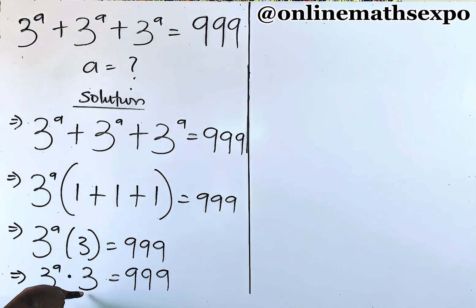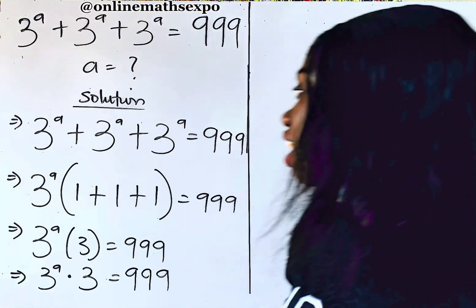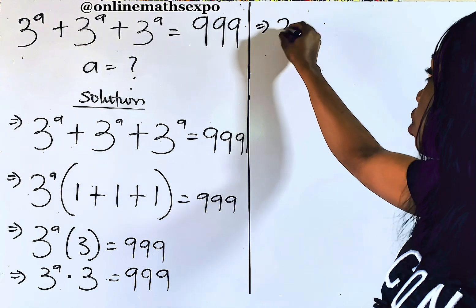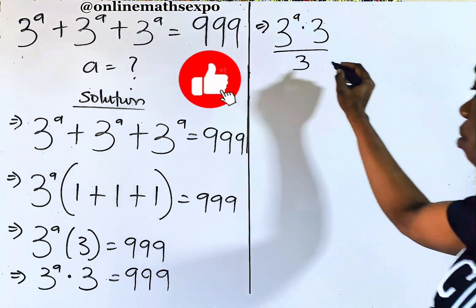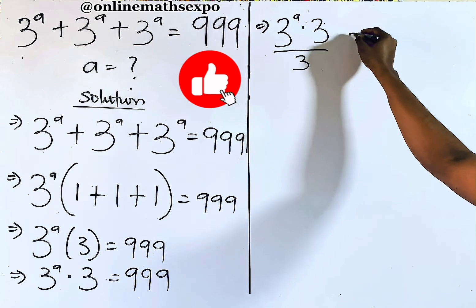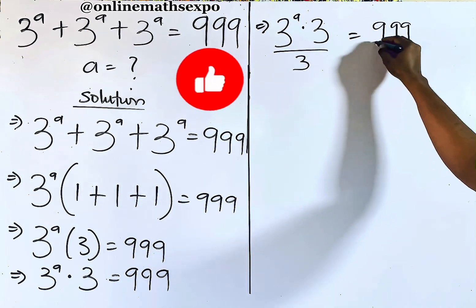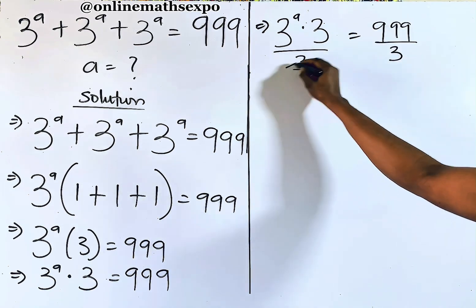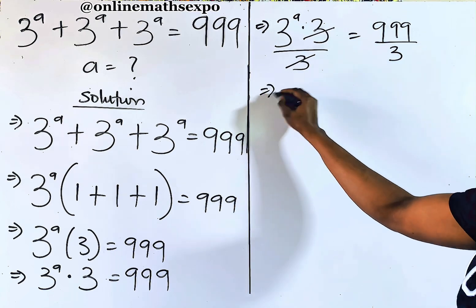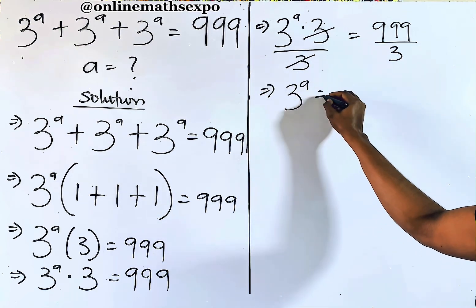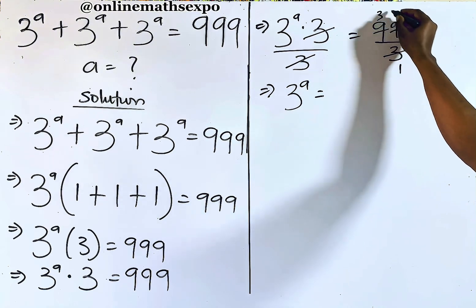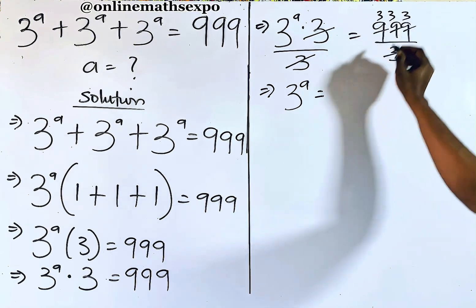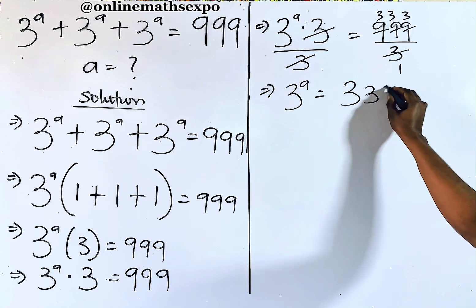To remove this 3 and get a, we divide both sides by 3. We have 3 to the power of a multiplied by 3, divided by 3, equals 999 divided by 3. The 3s cancel, so we have 3 to the power of a equals 333.